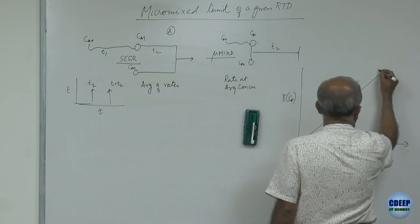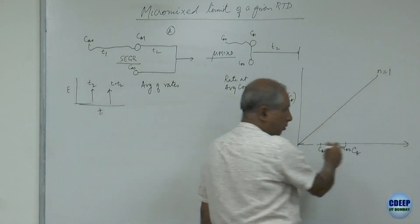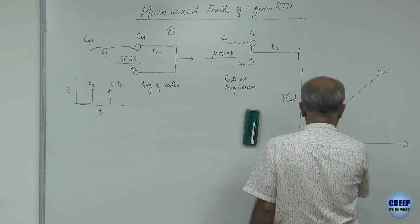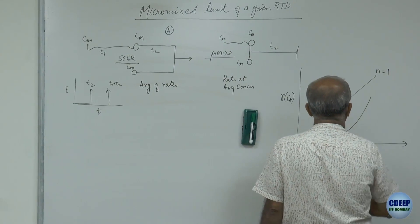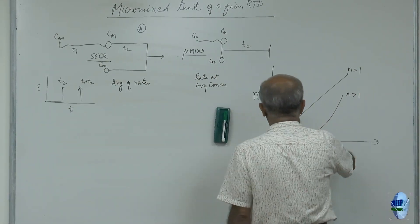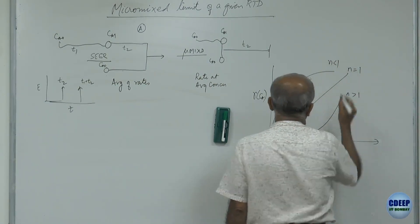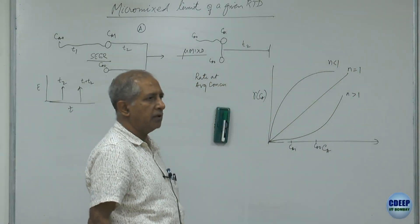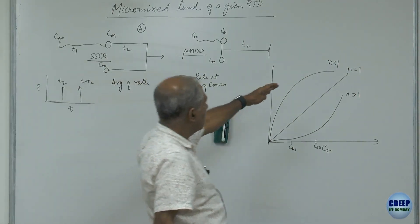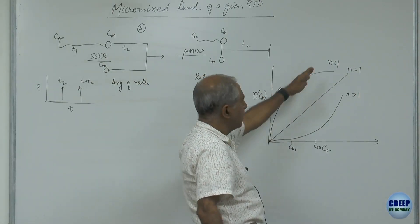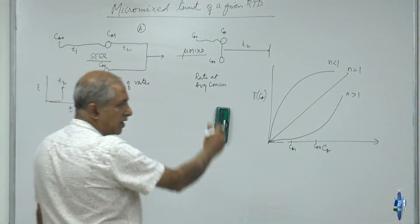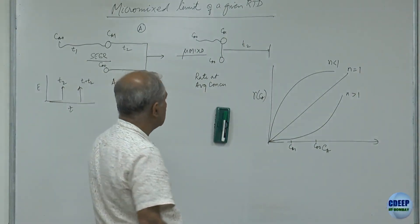For first order, rate is proportional to concentration — a linear function of concentration. For n greater than 1 and n less than 1, the shapes are concave to the x-axis for reactions of order less than 1, and concave to the y-axis for reactions of higher order.